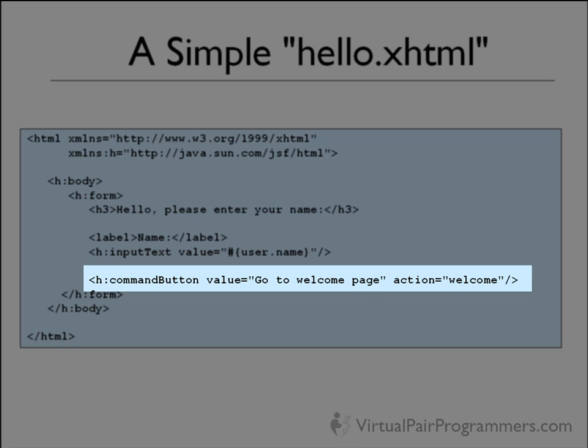We're going to place a button on the form. If you've worked with regular HTML, you'll know this can be quite fiddly because we'd have to put a submit button, map it to an action, and give the action a URL. Well, in JSF, we can simply use the command button component. It knows how to navigate from one page to the next. The action attribute is telling JSF which page to go to next - on pressing this button, it's going to find a JSF page called welcome.